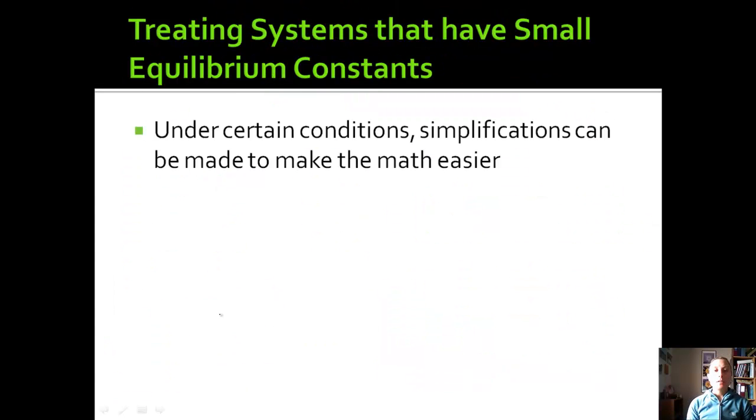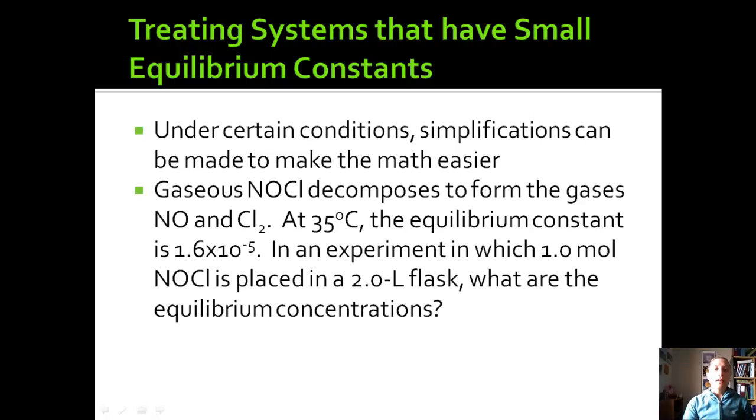Well, under certain conditions, we can make this math seem even easier because using the quadratic equation and things like that, that's a lot of work. So let's look at another example. We have gaseous NOCl decomposes to form the gases NO and chlorine. At 35, the equilibrium constant is 1.6 times 10 to the negative 5. In an experiment in which one mole of NOCl is placed in a 2-liter flask, what are the equilibrium concentrations? All right. Well, let's get a few things squared away first. Let's do the molarity of NOCl.